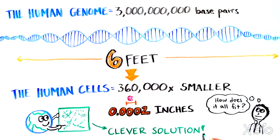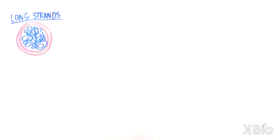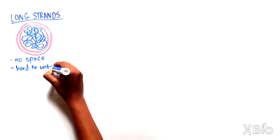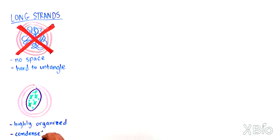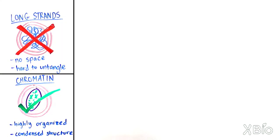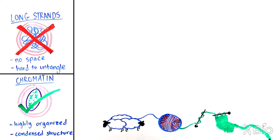As always, nature came up with a clever solution. Instead of all that DNA being stuffed into cells as long sinuous strands, which wouldn't leave room for much else and would be hard to untangle when the information is needed, the information is coiled up around a series of proteins into a highly organized, condensed structure called chromatin. As you'll see, it's similar to the process of turning wool into a knitted sweater, where each piece provides structure and organization to the next. Let's explore this concept a bit more.